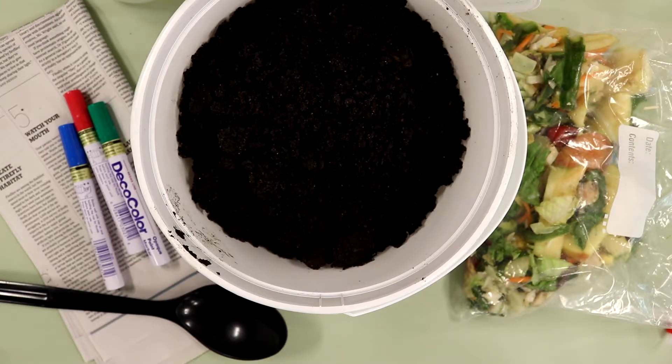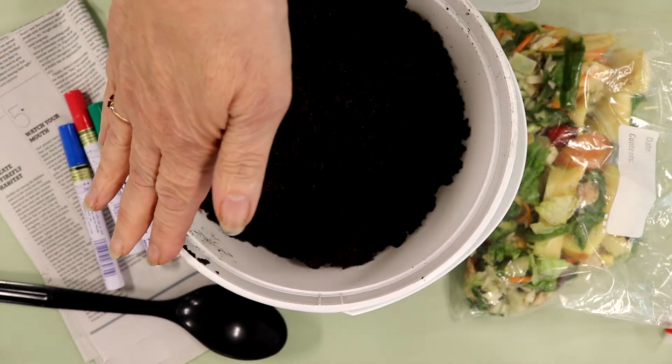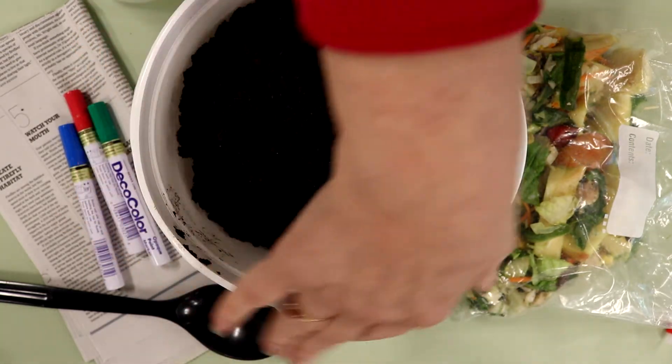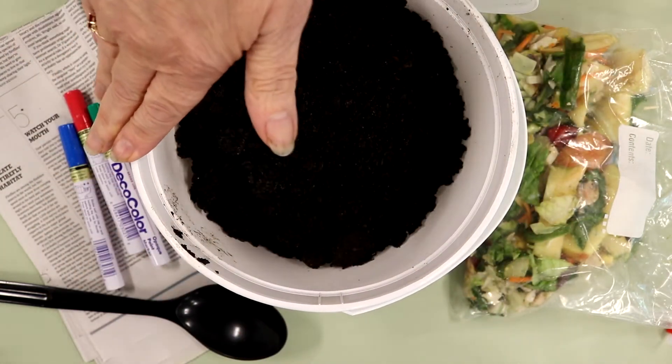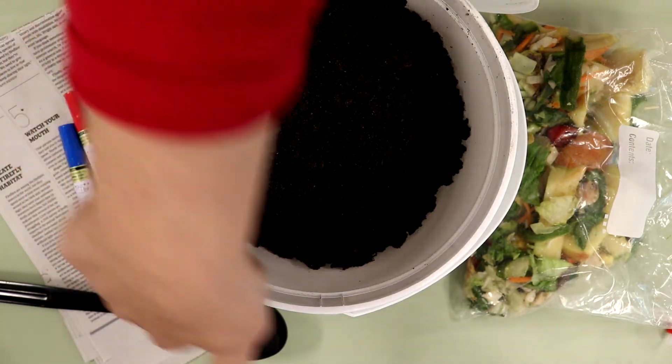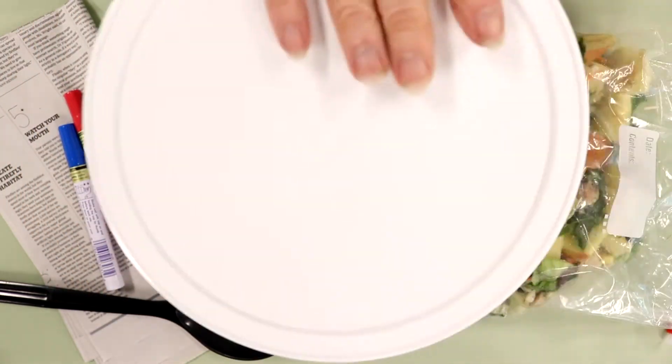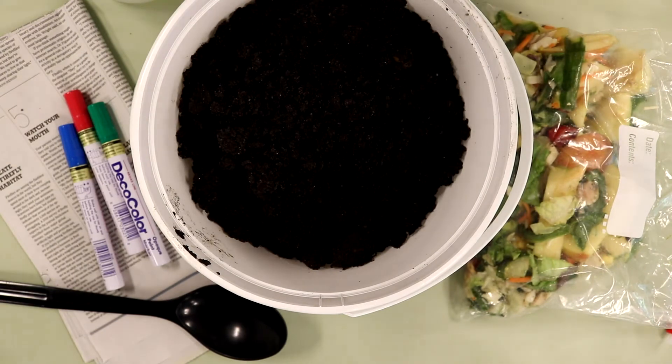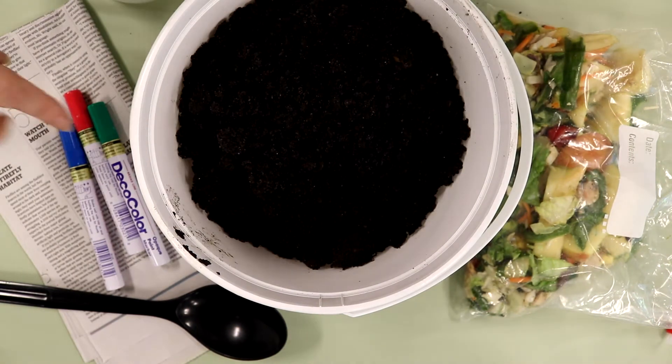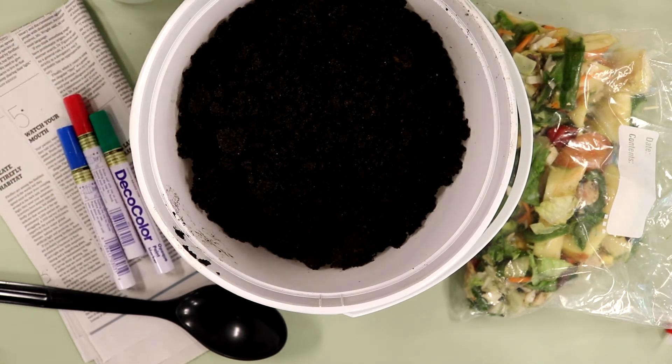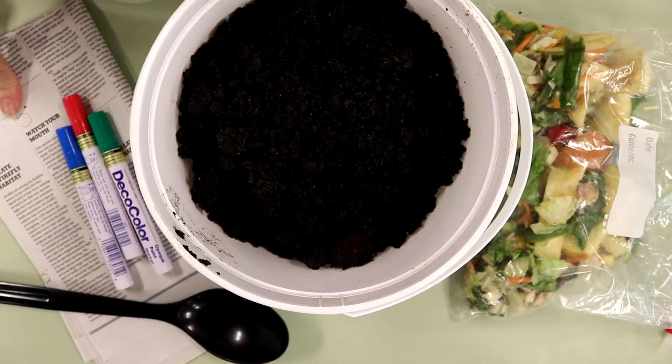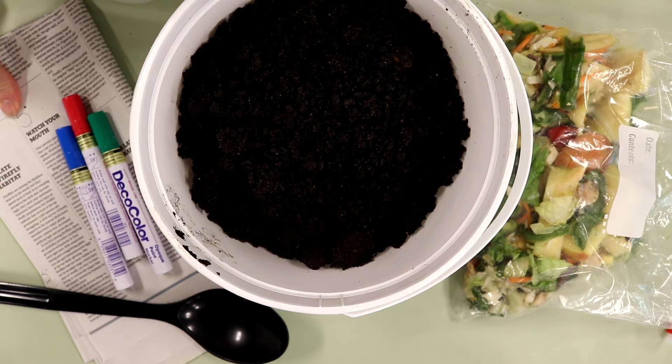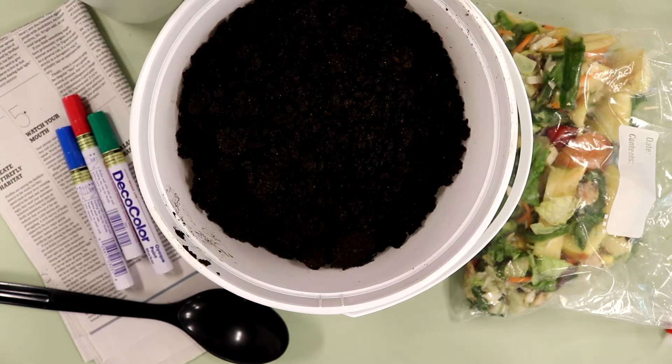This is what you need to make a worm farm. You need a plastic bucket. My bucket is not clear, that way the worms will feel nice and cozy. But if you use a clear container, you can take a piece of black paper and cover both the lid and the sides. You also need permanent markers if you want to decorate your container, a large spoon, black and white newspaper (we don't want to use colored), and a spray bottle with water.